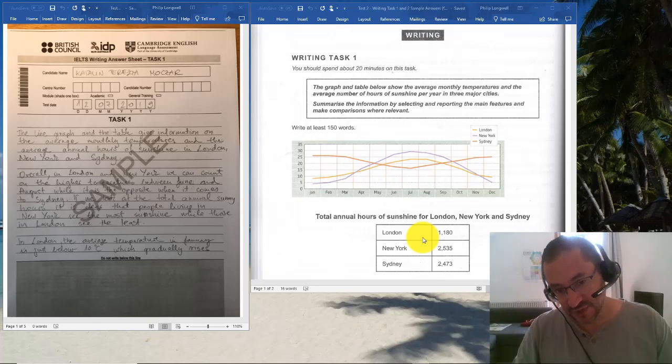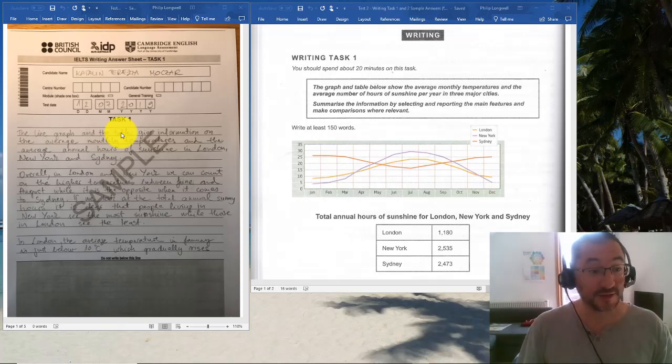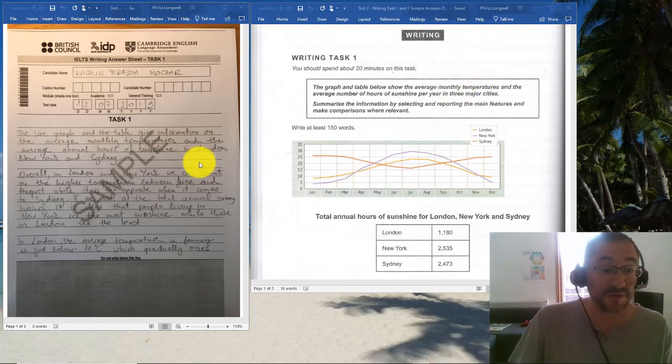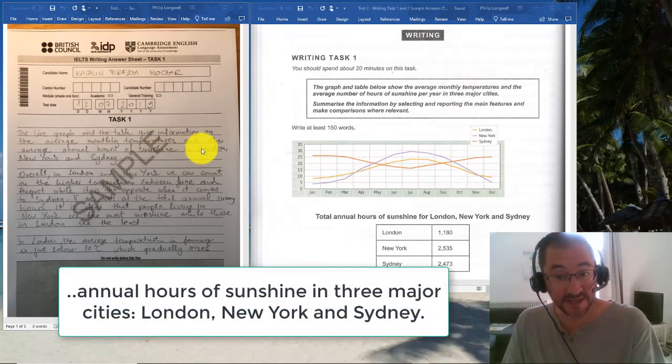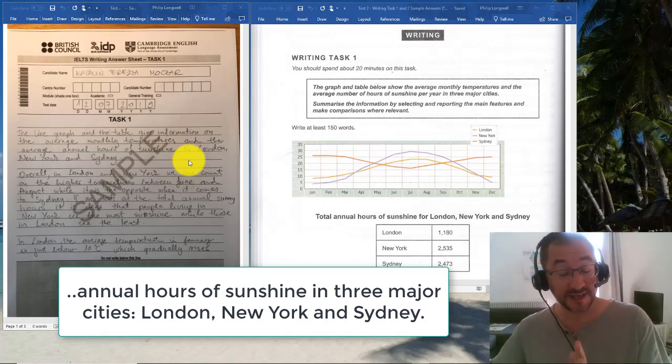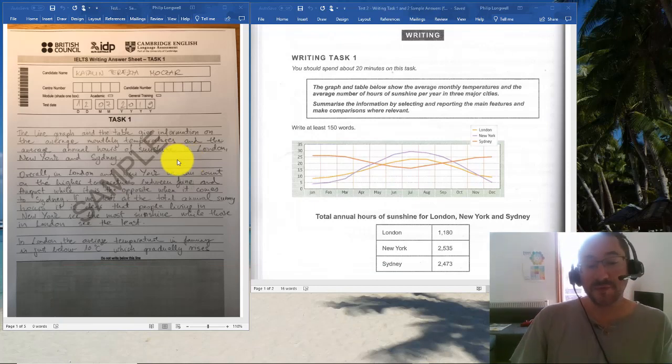In this case we've got both a line chart and a table, so we look at that information together. We talk about the graph and table, the line graph and table, as opposed to the line graph and the table. The line graph and table give information on annual sunshine in three major cities—and I would have put a colon here when introducing a list—London, New York, and Sydney.